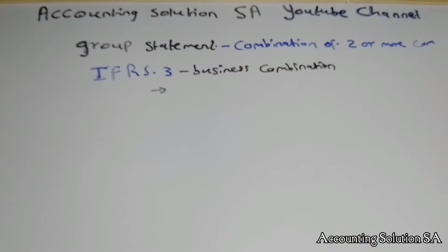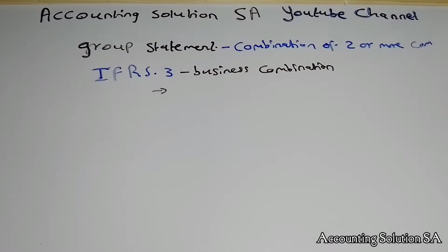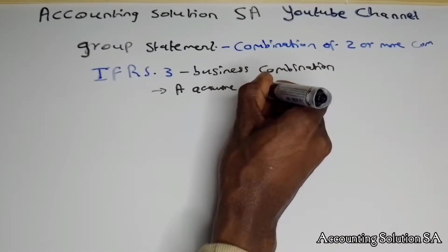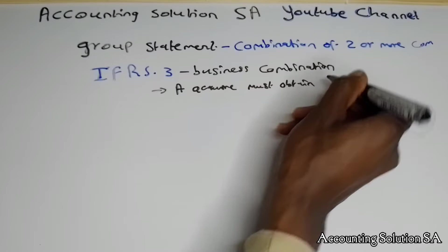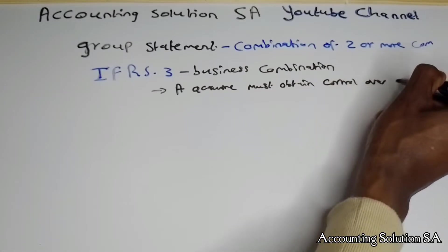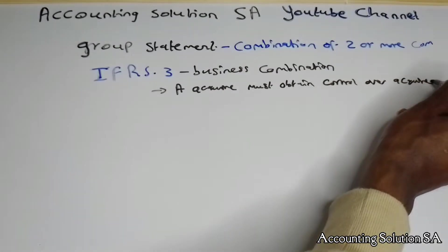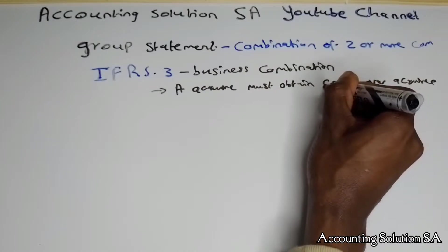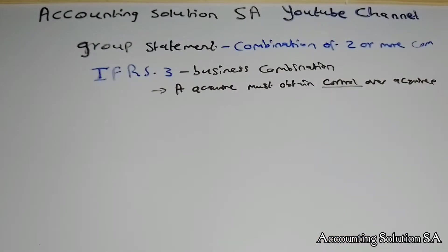The first requirement laid down under IFRS 3 that we have to know in and out is that the acquirer must obtain control over the acquiree. The business that has purchased must have control or power over the other business. This is the main key point under IFRS 3. Don't mix it up with IAS 28, which I'm going to summarize in this video. When we say the acquirer has control, it means they have the power to make decisions over the business they purchased.